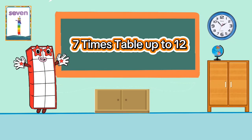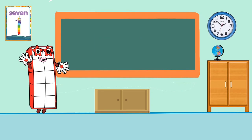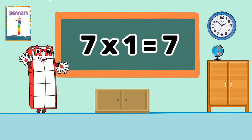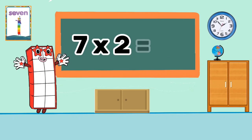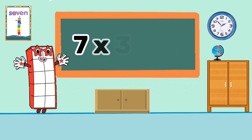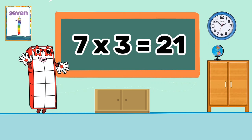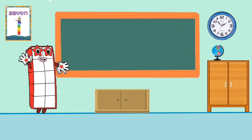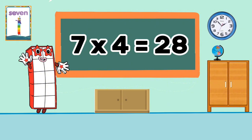7 times table up to 12. 7 times 1 equals 7. 7 times 2 equals 14. 7 times 3 equals 21. 7 times 4 equals 28.